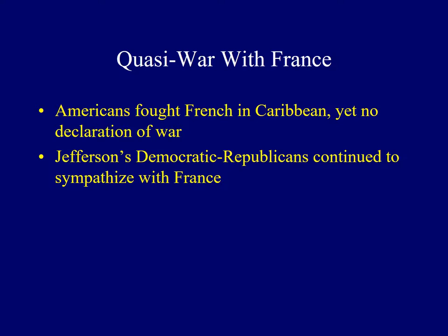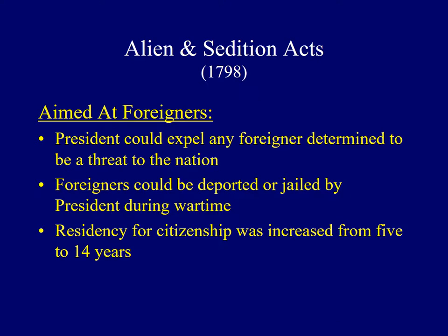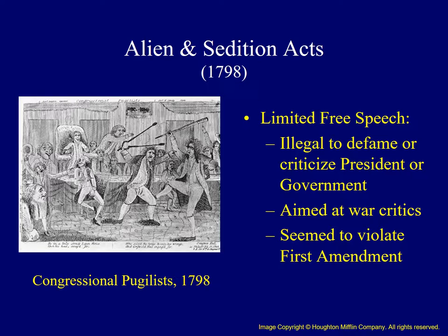A quasi-war began as there was fighting between Americans and French in the Caribbean, yet no formal declaration of war. Democratic-Republicans continued to sympathize with the French, so the Federalist-controlled Congress passed legislation to suppress opposition to the war. The Alien and Sedition Acts were a series of acts passed by Congress. Three were aimed at foreigners who tended to support the Democratic-Republican Party: one allowed the President to expel any foreigner he considered dangerous, another gave him authority to jail or deport foreigners during wartime, and a third extended the residency requirement for citizenship from 5 to 14 years. The Sedition Act was most controversial, establishing limits on free speech by making it illegal to issue statements criticizing the President or the government.